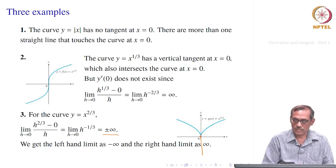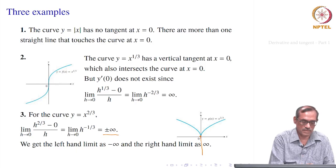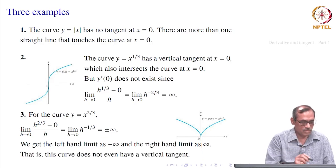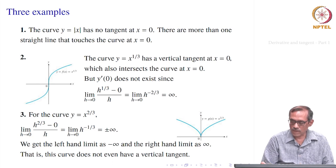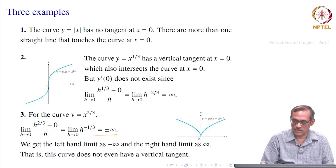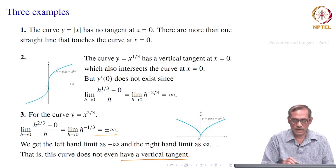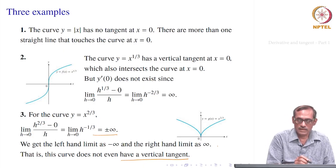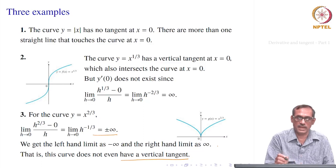What about the tangent for y = x^(2/3)? You might say a vertical tangent exists, but the function is not differentiable at x = 0. In order for a vertical tangent to exist, we should have the slope as infinity or minus infinity — one consistent limit — but here the left limit is −∞ and the right is +∞, so there is no single limit. We cannot say the y-axis is a tangent, and in fact the curve does not even have a vertical tangent.